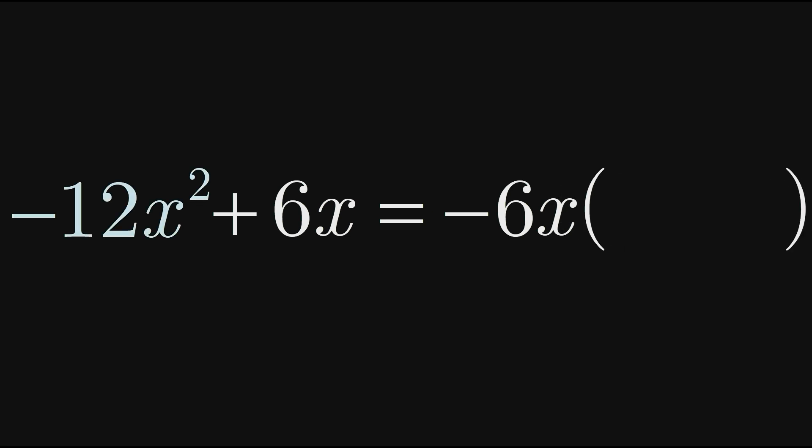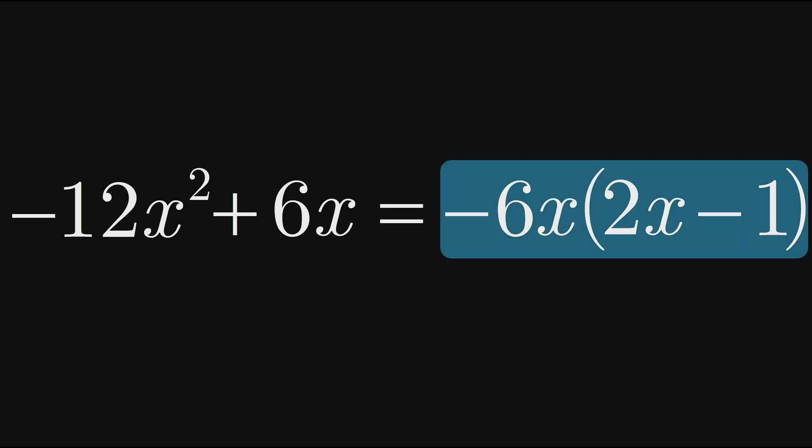Finally, we get negative 12x squared by multiplying negative 6x and 2x. And we get the positive 6x term by multiplying negative 6x and negative 1. Therefore, factoring negative 12x squared plus 6x gives negative 6x times 2x minus 1.